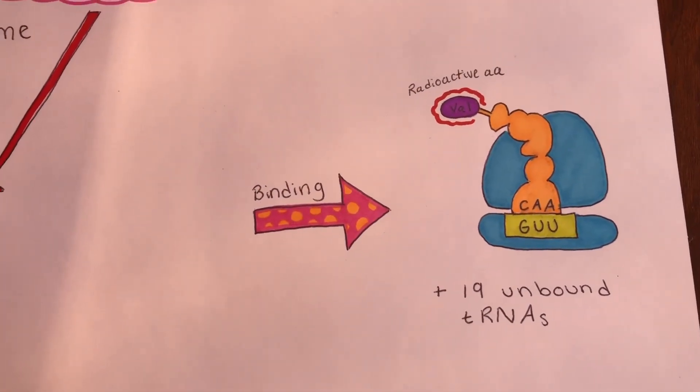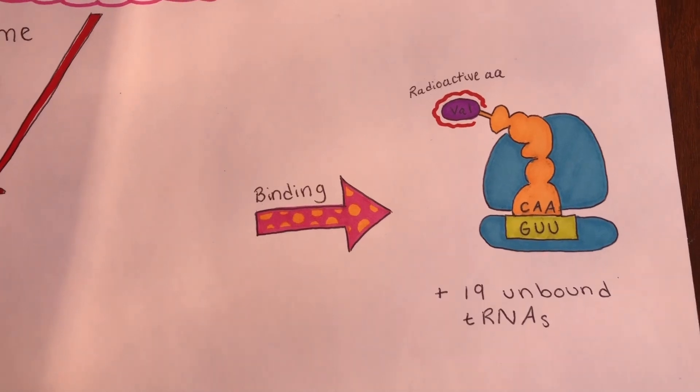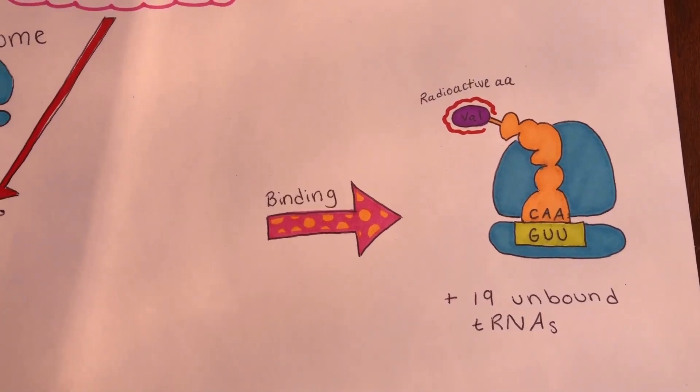The mixture was mixed and allowed for binding to occur. The ribosome bound the mRNA and the tRNA specified by the mRNA.